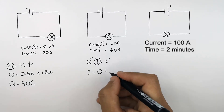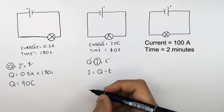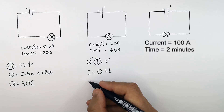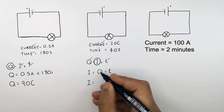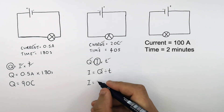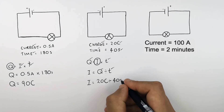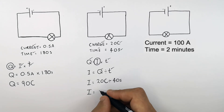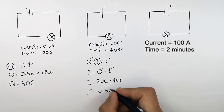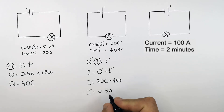So I equals Q (charge) divided by T (time). Substituting in the numbers: I equals 20 coulombs divided by 40 seconds. Because current is the rate of flow of charge, the current is 0.5 amps — meaning 0.5 coulombs flowing per second through the circuit.